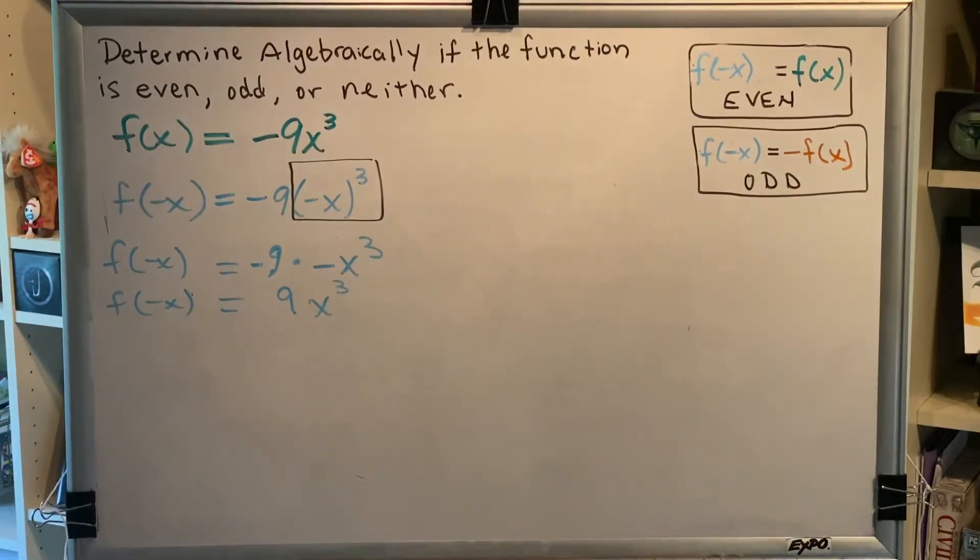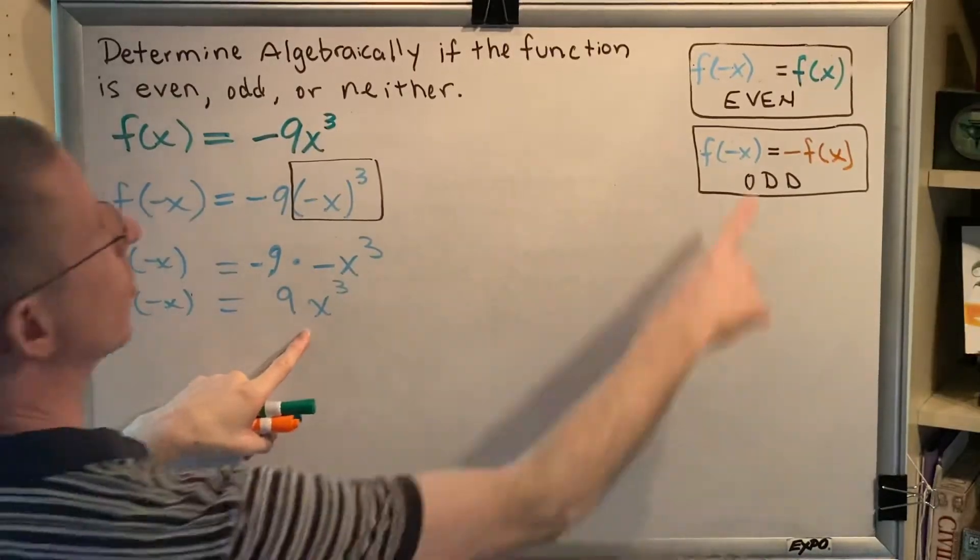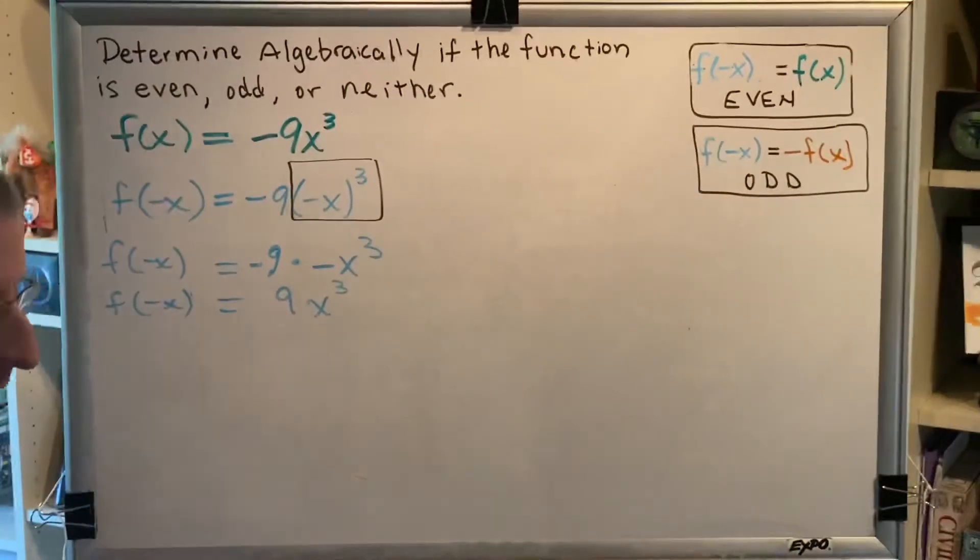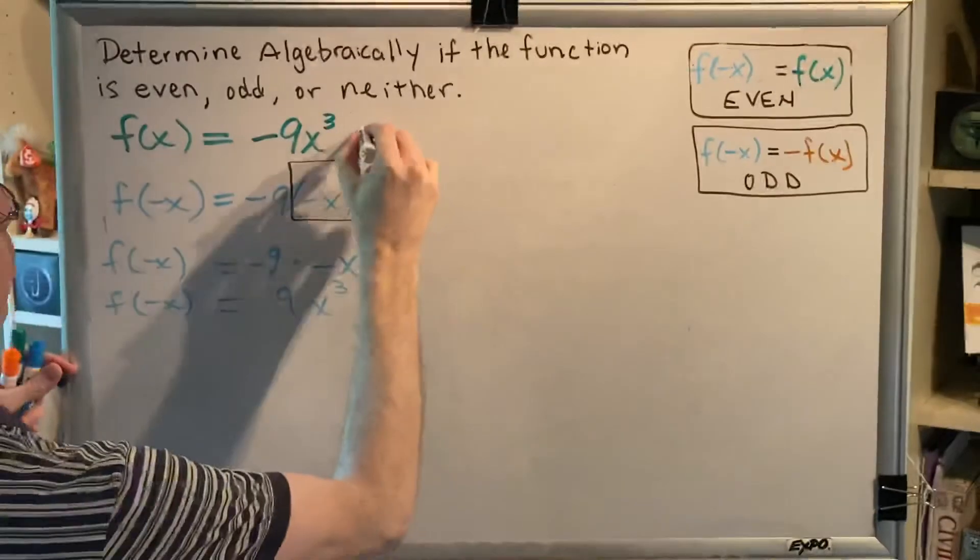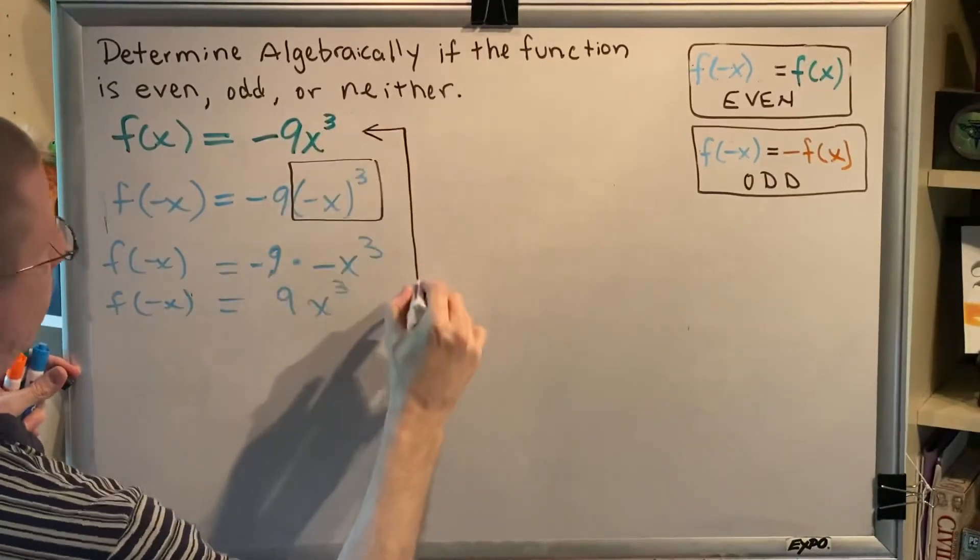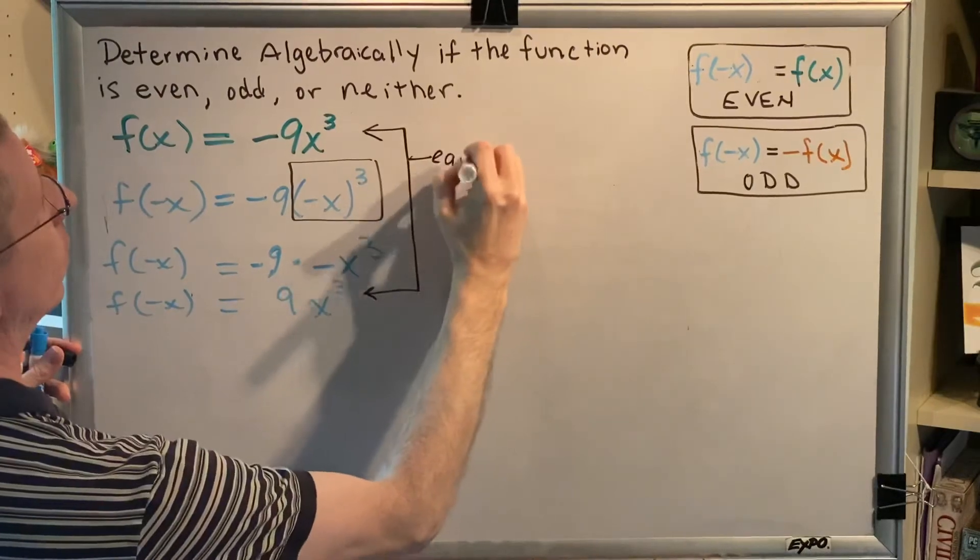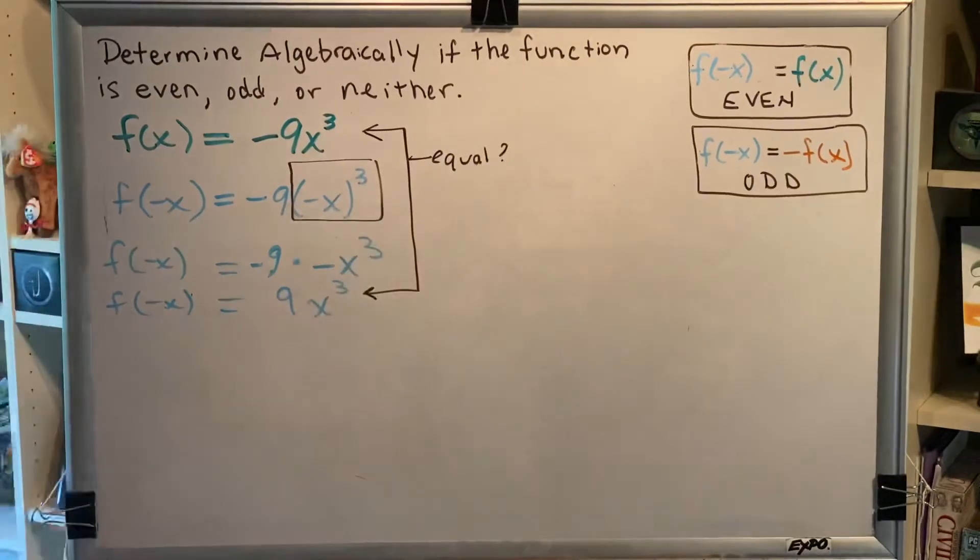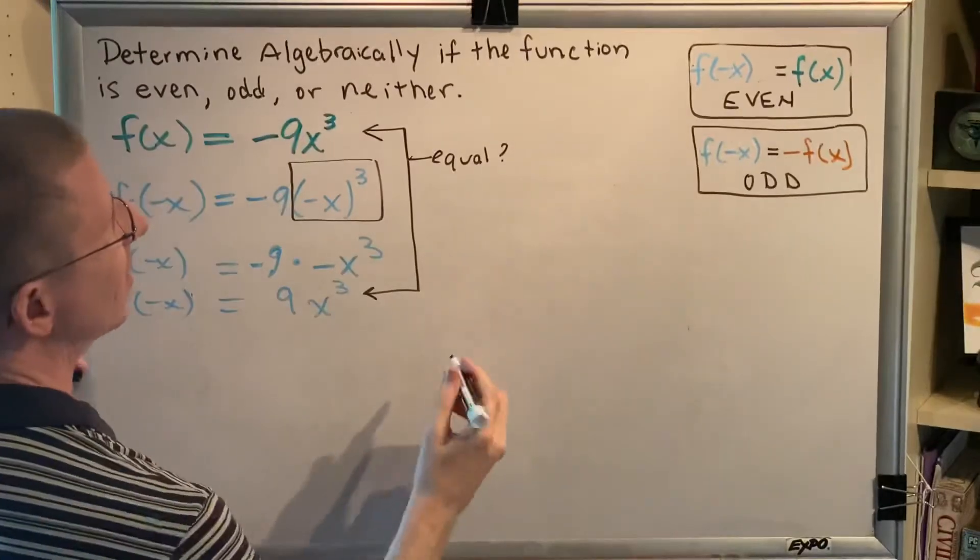We're ready for our first comparison. We've got the green and the light blue. We've got f of x, which is given in the problem, and we've got f of negative x, which is shown here. We want to compare those and ask if they are equal. So, is this equal to this? The answer is no. Therefore, this function is not even.